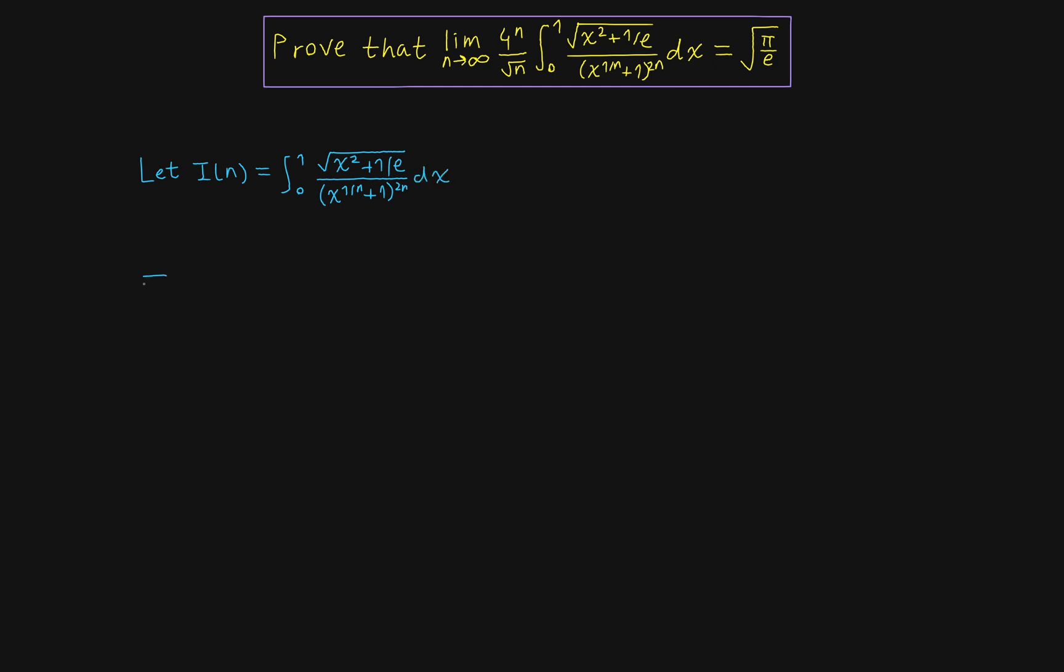Now we're going to do some substitutions. So first, we're going to let x be equal to t to the n. It's going to introduce new variable t. Differentiating this, you're going to get n t to the n minus 1. So we have n integral 0 to 1, t to the n minus 1, square root of t to the 2n plus 1 over e, all divided by t plus 1 to the 2n dt.